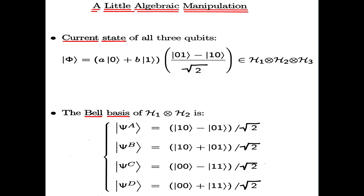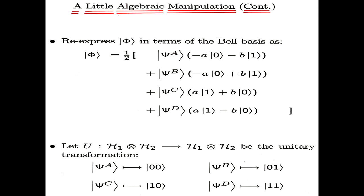Okay, and what's next? So in summary, the current state of all three qubits is as shown here. And what we're going to do is we're going to change our basis. This is what is known as a Bell basis. This is a basis of H1 tensor H2. And it is here as shown. It's a very famous basis. It can be used in many different ways.